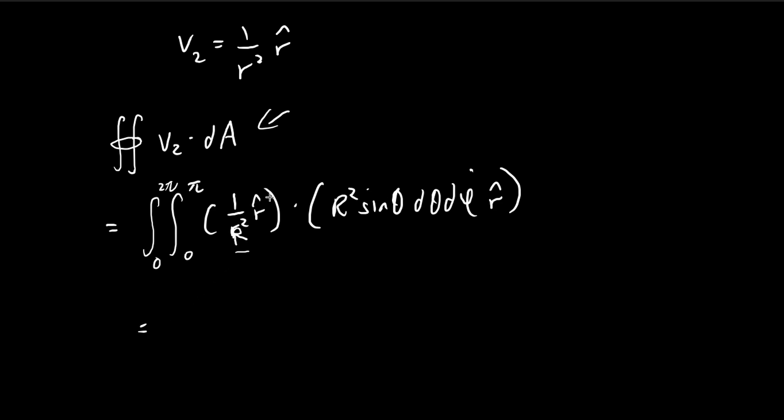We've gone from this abstract surface integral to something concrete, something we can evaluate. The r squares cancel each other out. These two dot each other to give you 1. In the end, you're left with this integral: sine theta d theta d phi.